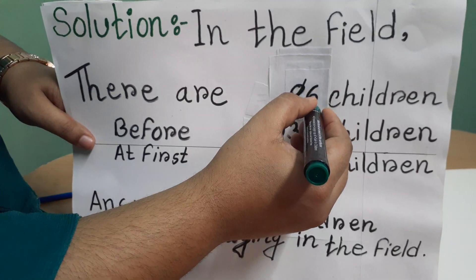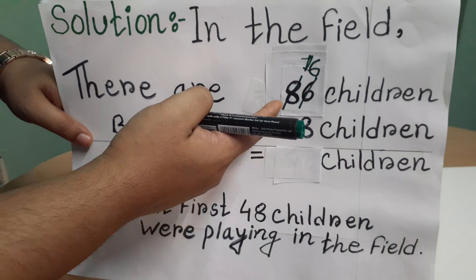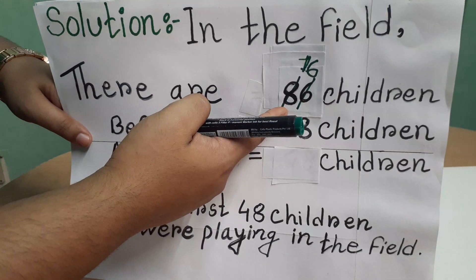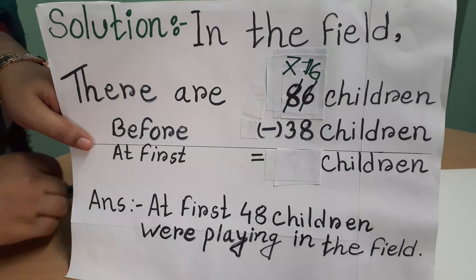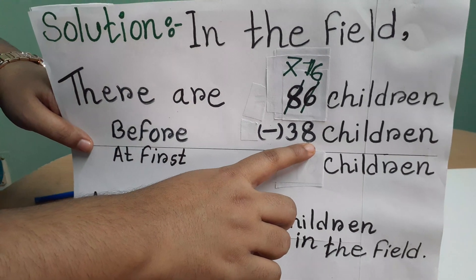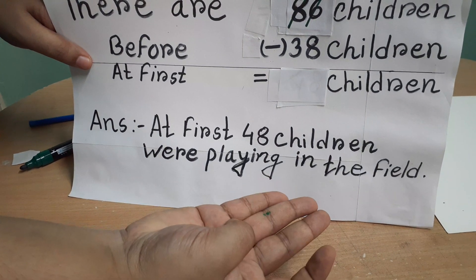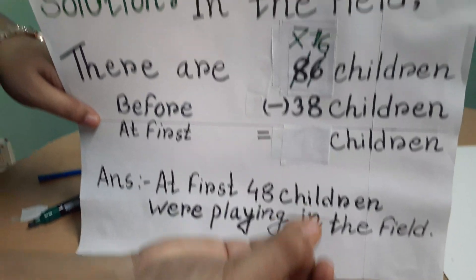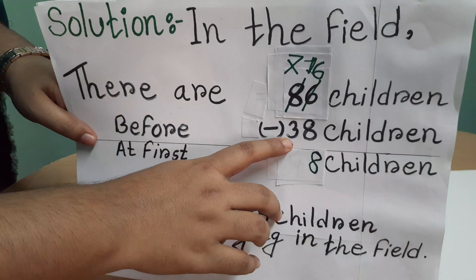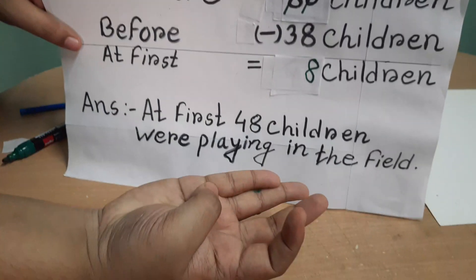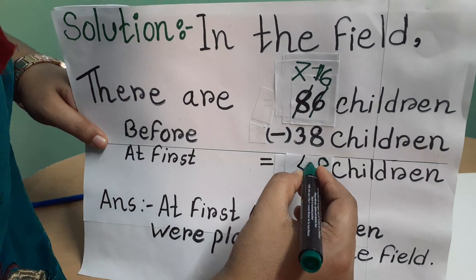This 10's place will give 1 ten to this 1's place. So this 8 has given 1 ten to this 6, so this 6 becomes 16. And this 8 has given 1 ten to this 1's place, so now this 8 becomes 7. Now I can do the subtraction. After 8 up to 16, I will count: 9, 10, 11, 12, 13, 14, 15, 16 — I have got 8. Then after 3 up to 7, I will count: 4, 5, 6, 7 — how many numbers? 4. That's why I am writing 4.